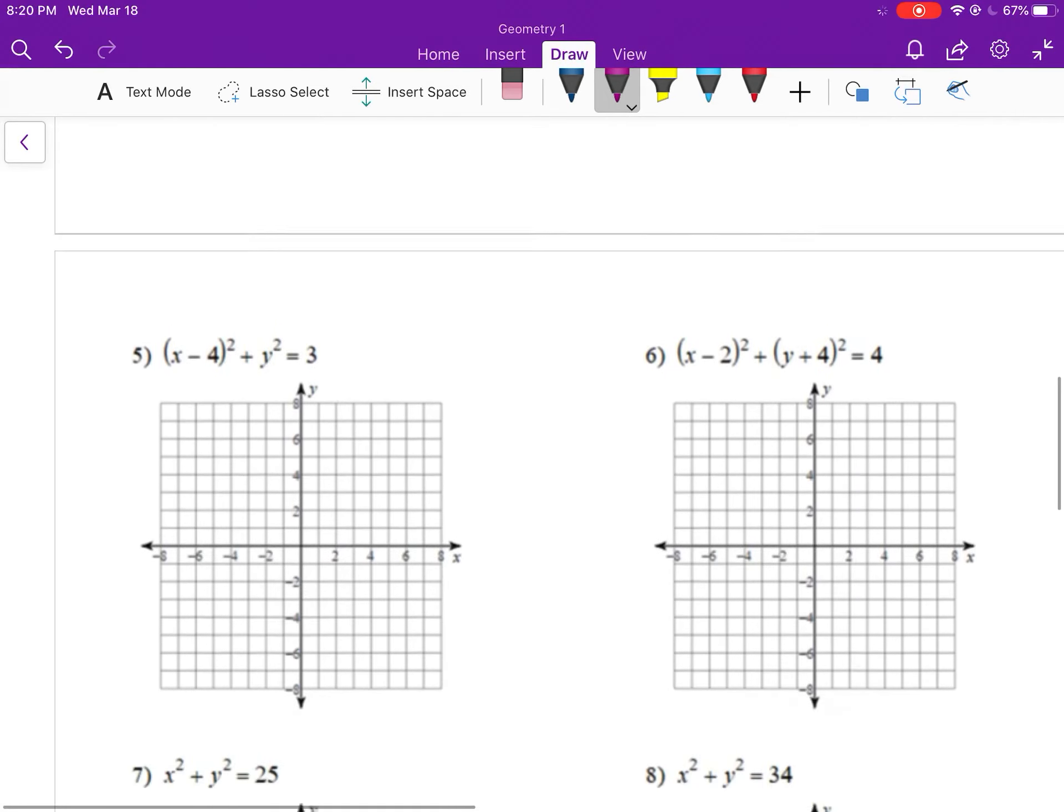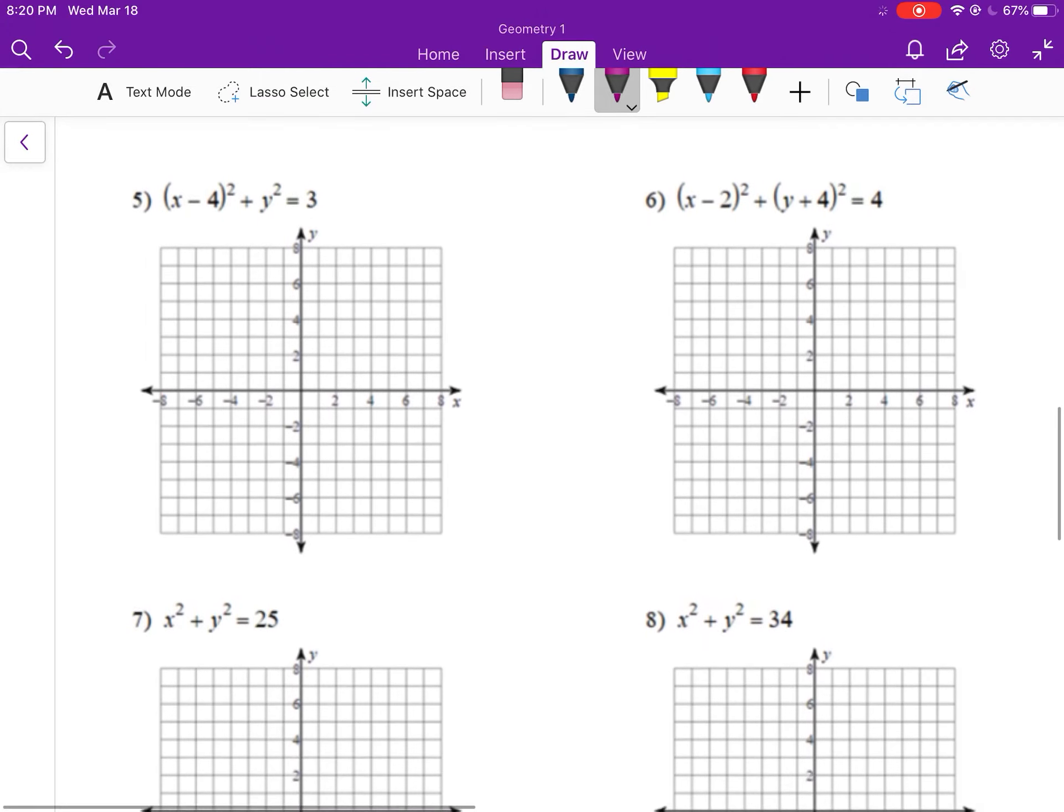I want to skip down to a couple down here, just so you're aware and don't get confused. Just the same idea, just written a little differently. So this one is (x - 4)², which means we're going to go right four. We're going to do the opposite. And this says just y², which means (y + 0)². So we're going to move up or down zero.